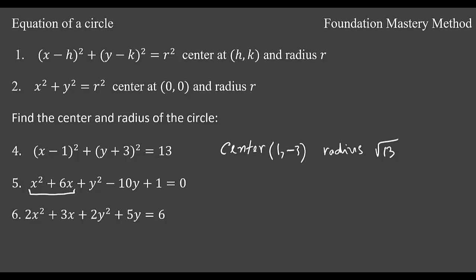So when you divide all the terms by 2 you get x² + 3/2x + y² + 5/2y = 3. Now we do the same thing like example 5.